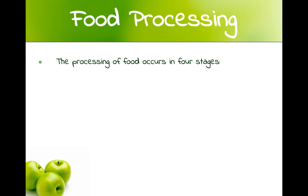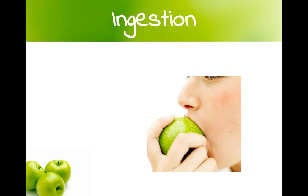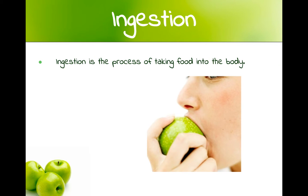The processing of food occurs in four stages: ingestion, digestion, absorption, and finally elimination. Stage one is ingestion, which is simply the process of taking food into the body. For humans, this is putting food in our mouth and starting the process.